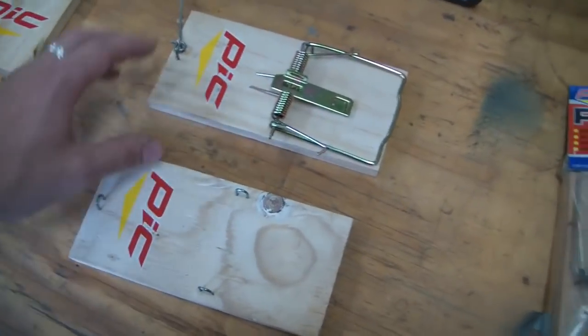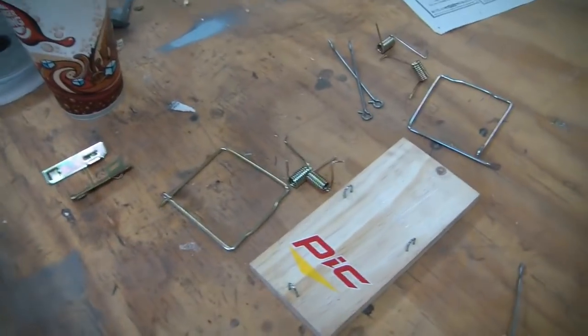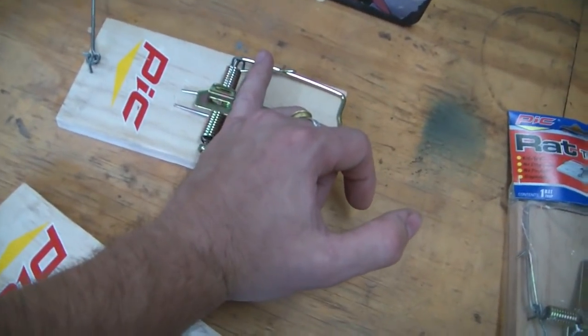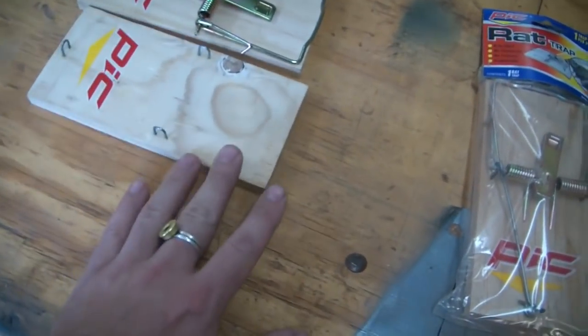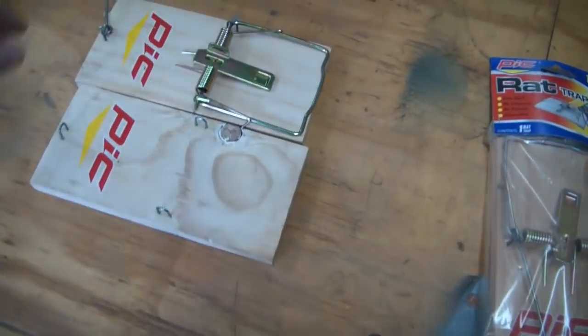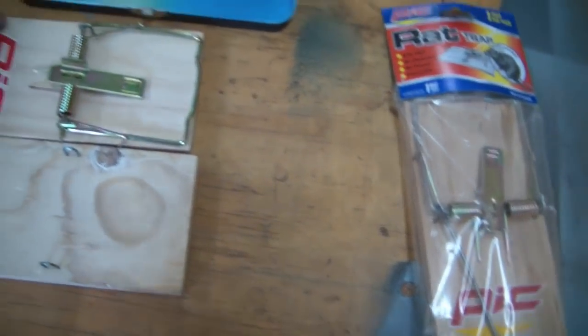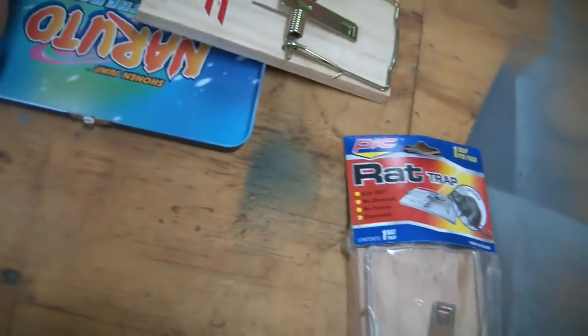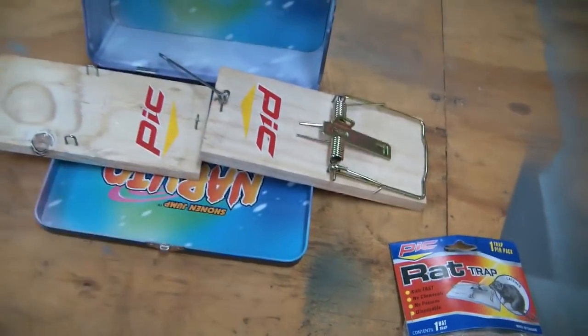For now we have some dollar store rat traps we've disassembled and what we're going to do is we're going to cut behind this line here because we won't need that section. And then we'll kind of size it up to see how much room we're going to need between them to fit it in our lunch pail.